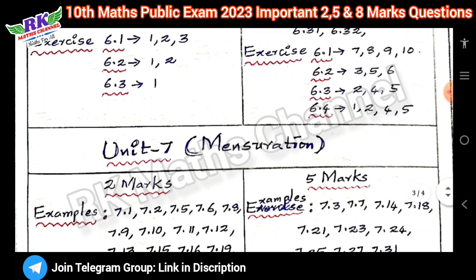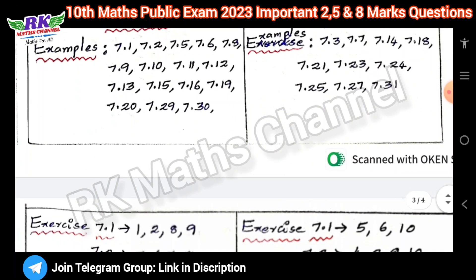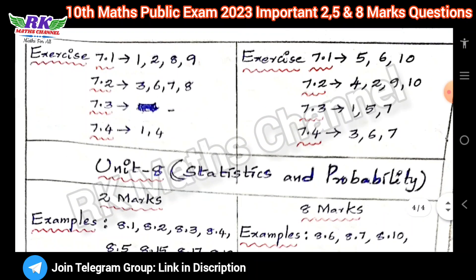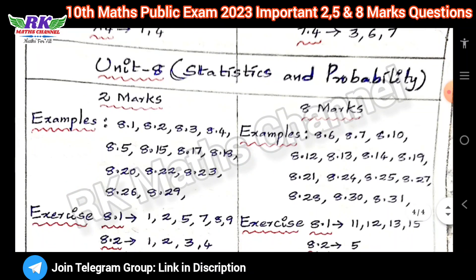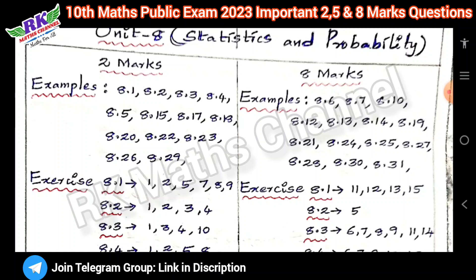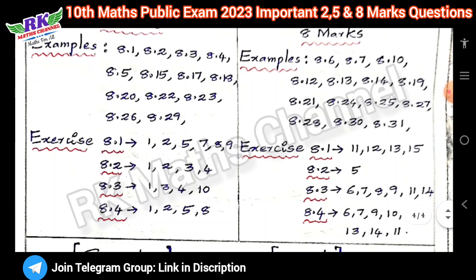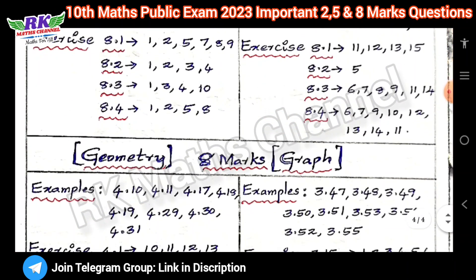Next, seventh unit: Mensuration — examples, two mark and five mark, each exercise, two mark and five mark. Eighth unit: Statistics and Probability — two marks, five marks, eight marks. Five marks — examples and exercises. Eight units — eight mark questions.